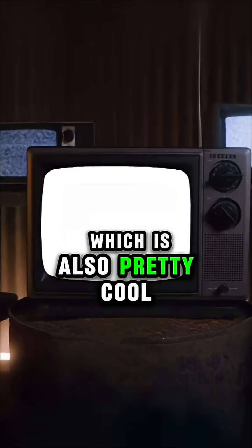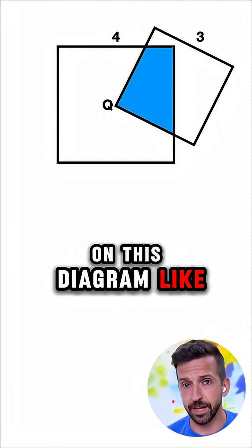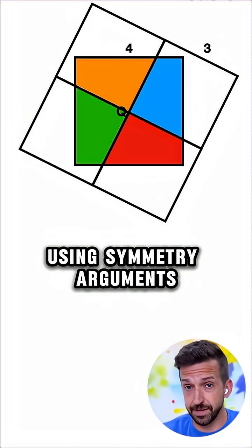Now a second solution, which is also pretty cool, involves tiling 3 more of the smaller squares on this diagram like I'll show you. 1, 2, 3.